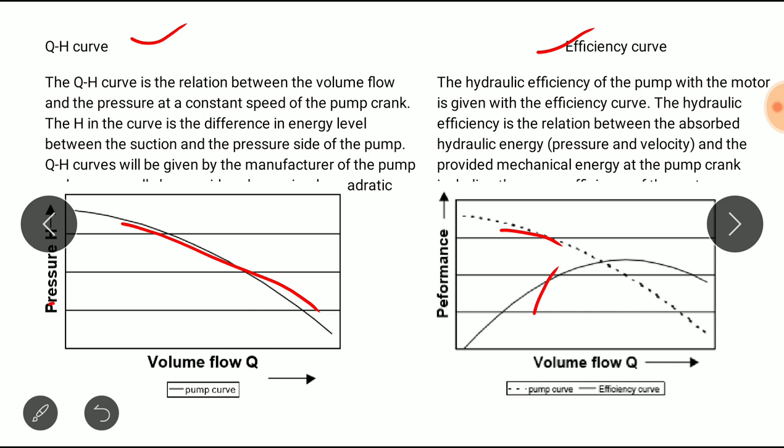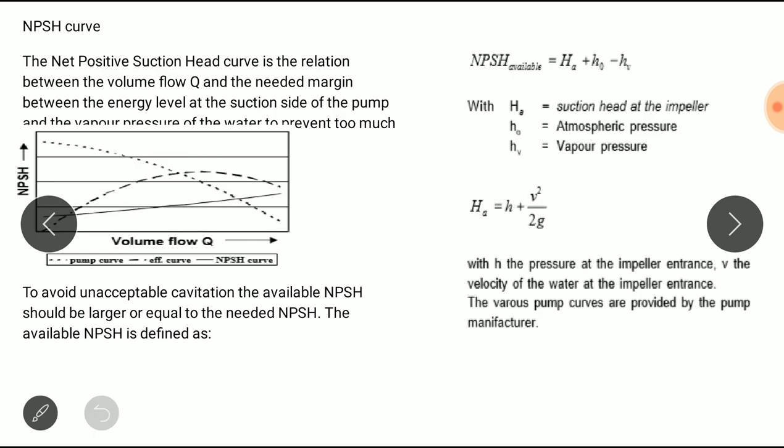The third one is the NPSH curve. NPSH means Net Positive Suction Head. The Net Positive Suction Head curve is the relation between the volume flow rate and the needed margin between the energy level at the suction side of the pump and the vapor pressure of the water. It should not be too much. We should have to take care that the negative pressure should not be less than the vapor pressure so that there should not create any cavitation.